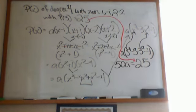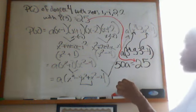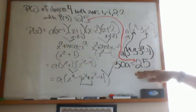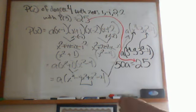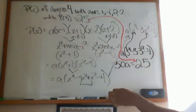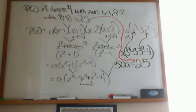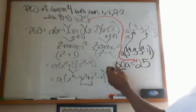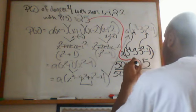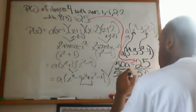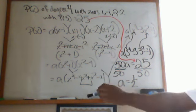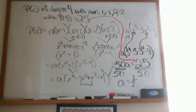Now I solve for a. Dividing both sides by 50, I get a equals one half. That one half is the leading coefficient at the front of my polynomial. But I'm not done yet — I still have to write down the full polynomial.